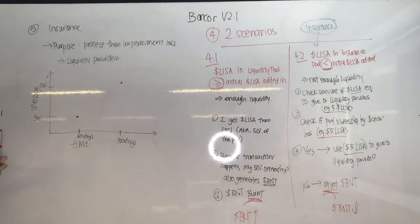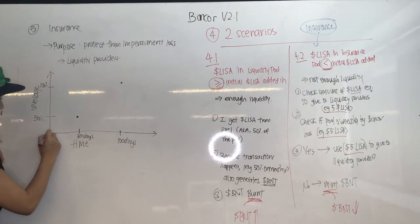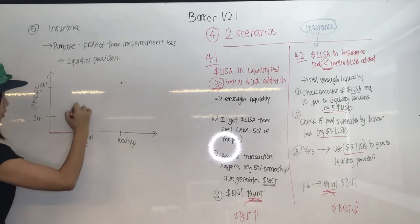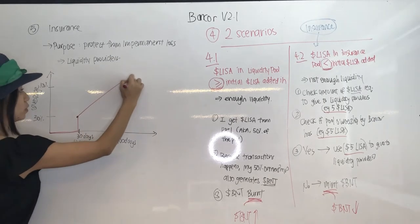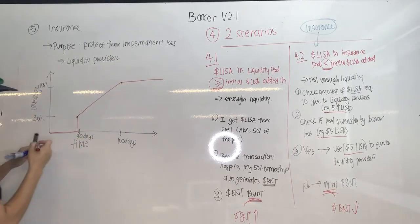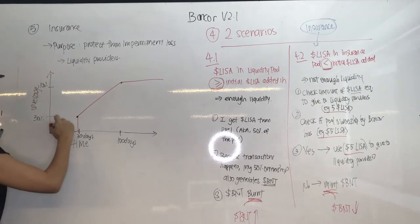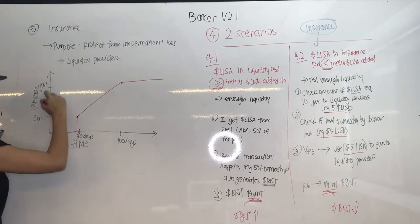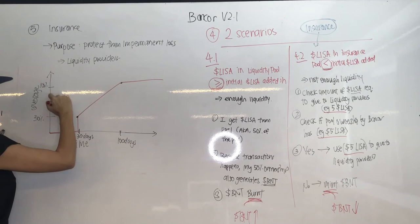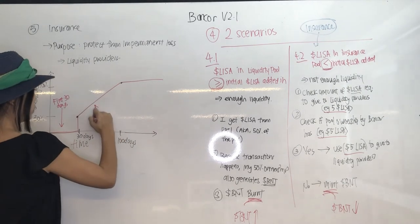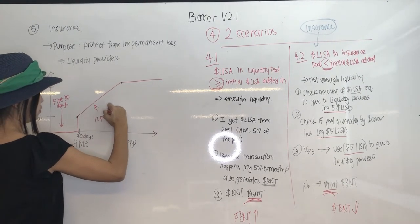So 100% is really the maximum insurance. If you're only covered 30%, the liquidity pool will only return 30% of your impermanent loss. In other words, keep your tokens in for more than 100 days to get 100% coverage.